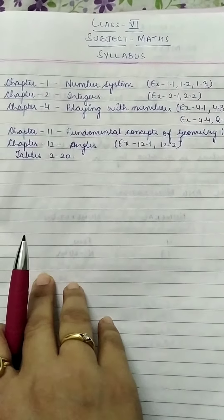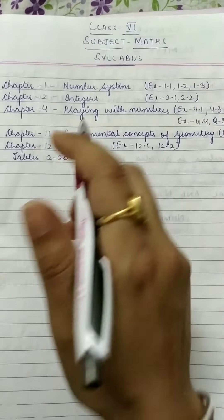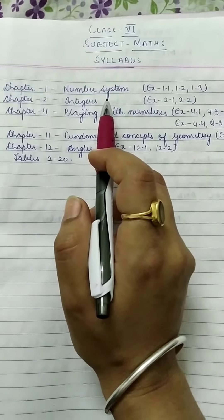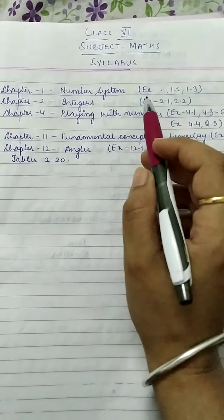In your first term syllabus, there are five chapters. Chapter 1: Number System. In this chapter, three exercises are there - Exercise 1.1, 1.2, and 1.3.